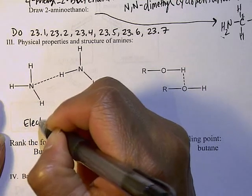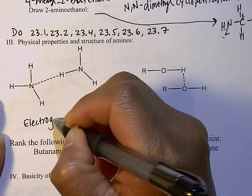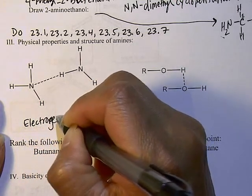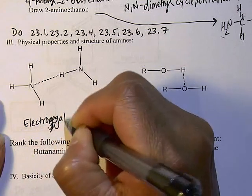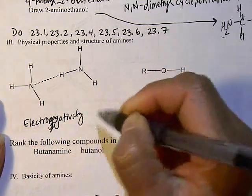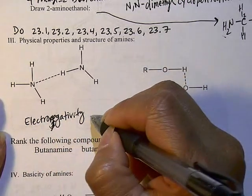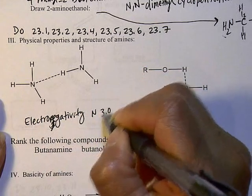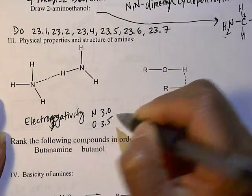All right. Now, the electronegativity difference between—sorry, electronegativity, can't spell and talk at the same time. Nitrogen is around 3. Oxygen is 3.5.